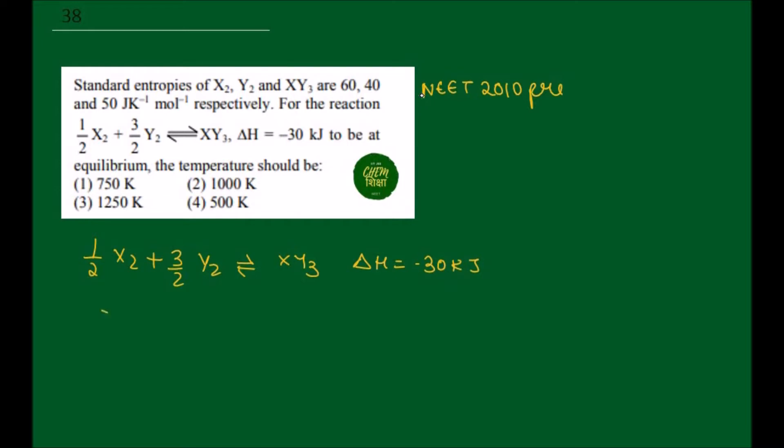Now we have to multiply this whole expression by 2. So what happens? X₂ plus 3Y₂ gives 2XY₃, and we have this whole equation multiplied by 2. So this delta H will be 2 times, so it will be minus 60 kilojoules.